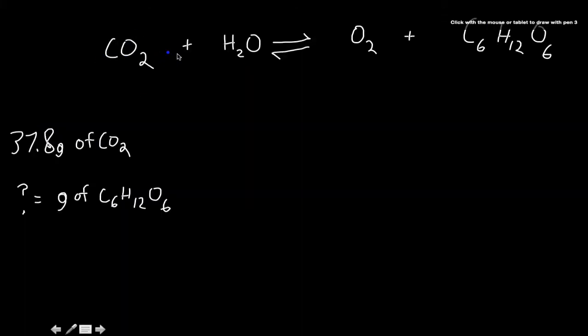So, this is just an example problem using the concept of stoichiometry to find out what something is. So, in this sample problem, you're given 37.8 grams of CO2 of carbon dioxide, and I want to know, assuming I have an excess amount of water, plenty of water, how many grams of glucose, C6H12O6, I can make.